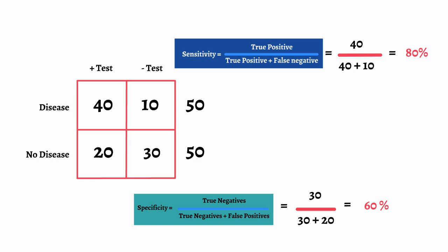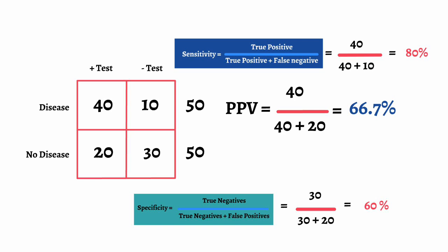Now let's do positive predictive value. Positive predictive value is true positives divided by the sum of true positives plus false positives. So it's 40 divided by 40 plus 20, which is 40 divided by 60 — two thirds, or 66.7%, rounded to 67%. Negative predictive value is true negatives divided by the sum of true negatives plus false negatives. This is 30 divided by 30 plus 10, so 30 divided by 40, which is three quarters, or 75%.